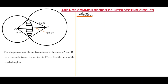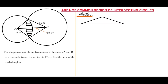Looking at this question, something is missing — we have not been given the common chord length. That presents us with the first challenge. The best place to start is to sketch out a region from the diagram. I'll label this triangle D-C, extracted from the diagram. The measurement of AB is 12 centimeters, DB is 8 centimeters, and AD is 6 centimeters.